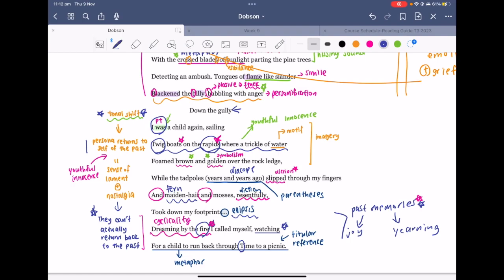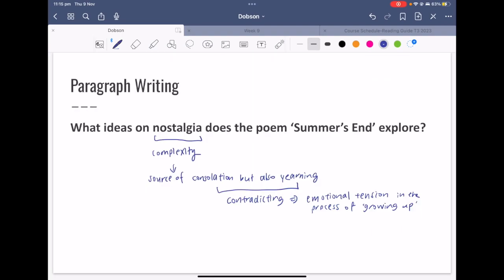That comes to the end of the poem analysis, and now if you move on to paragraph writing, the paragraph that I want you to have a go at writing is on the question: what ideas on nostalgia does the poem Summer's End explore?